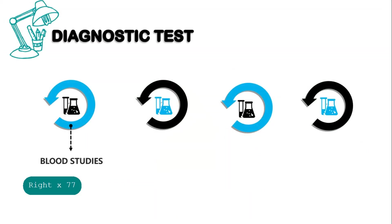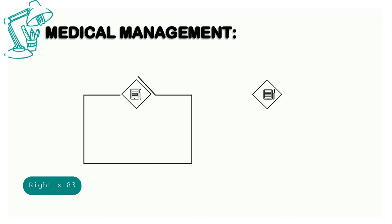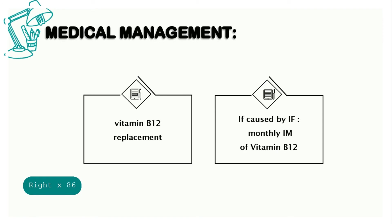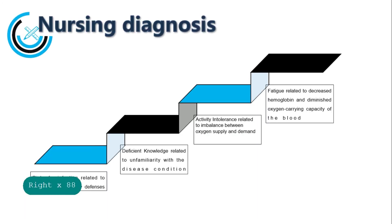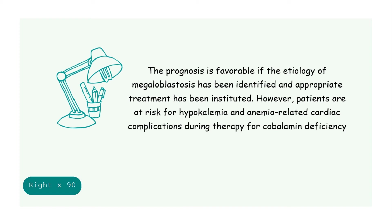For diagnostic tests, there should be blood tests, Schilling tests, intrinsic factor antibody tests, and bone marrow aspiration. For medical management, vitamin B12 deficiency is treated with vitamin B12 replacement. Vegans can prevent or treat deficiency with oral supplements or fortified soy milk. When deficiency is due to the more common defect in absorption or the absence of intrinsic factor, replacement is by monthly intramuscular injection of vitamin B12. The prognosis is favorable if the etiology of megaloblastosis has been identified and appropriate treatment has been instituted. However, patients are at risk for hypokalemia and anemia-related cardiac complications during therapy for cobalamin deficiency.